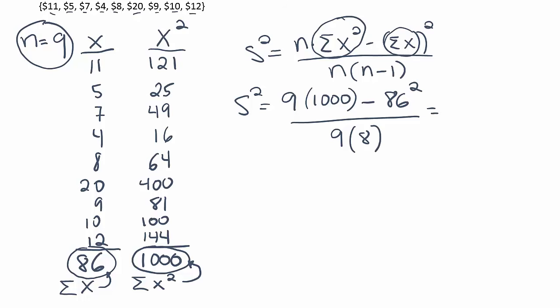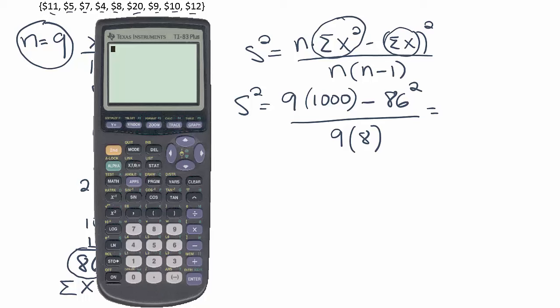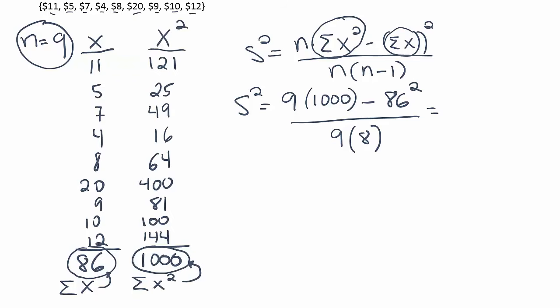And the rest we can plug right into our calculator. So we'll have 9 times 1000, which of course is 9000, minus 86 squared. Notice how I'm going to do the top part of this first separately. I get 1604 all over 9 times 8. Now 9 times 8 is 72. But even if you didn't know that, you could just enter it into your calculator, right?